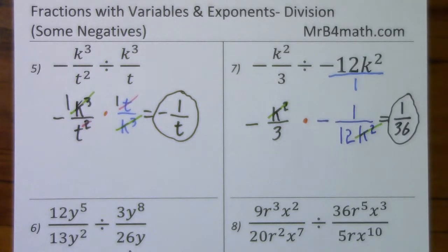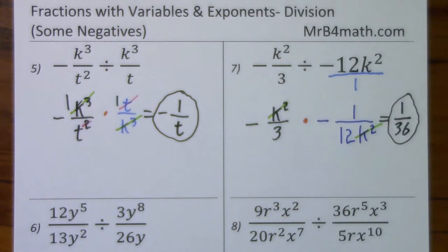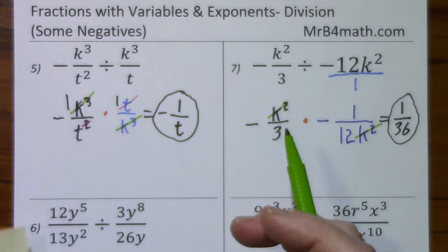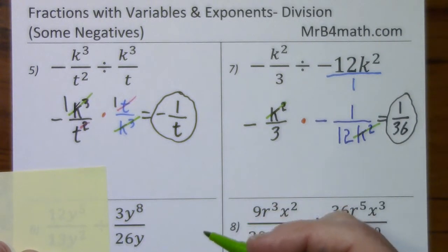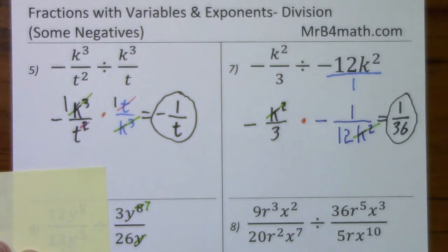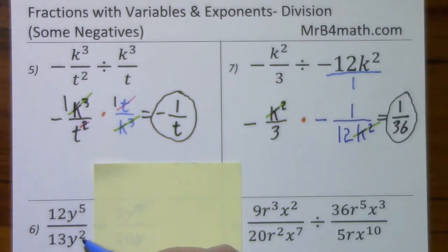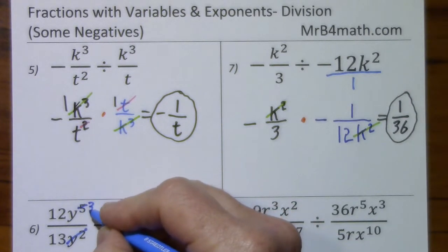This is the first time that we'll be able to reduce before we take the reciprocal. If you notice in these previous problems, I couldn't reduce anything before this step. But now I have y over y to the eighth, so I can clean this up before I get started. Y — this is y to the first — subtract 1, leaves you with y to the seventh in the numerator. The 3 and the 26, you can't reduce anything — there's no common factor. And over here we can clean this up: y squared cancels, subtract 2, leaves us with 3.